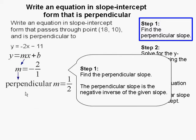To find the perpendicular slope, we take the negative inverse, which is the reciprocal of the slope multiplied by -1. Therefore, the perpendicular slope would be positive 1/2.